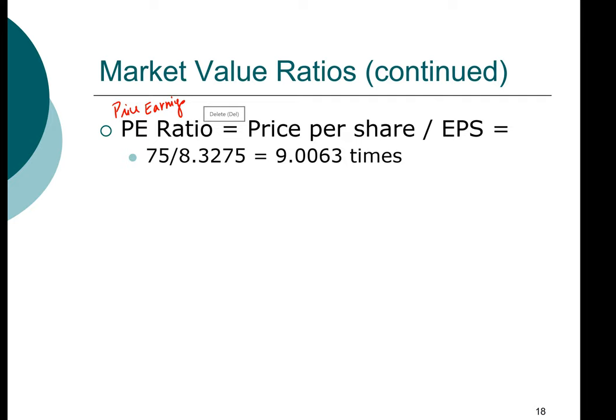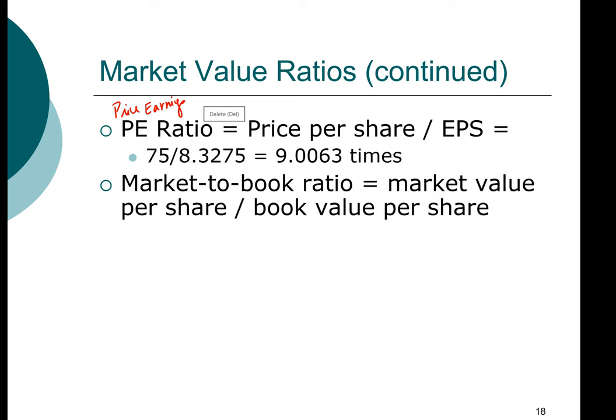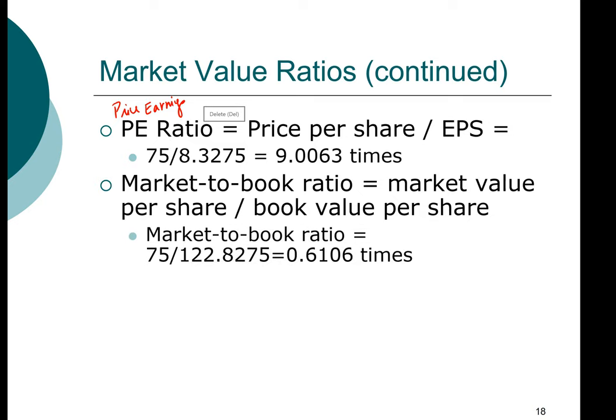The next ratio is the market-to-book ratio. We take the market value of $75 divided by the book value per share, and we get 0.6106. That means the market value is only 61% of the book value of this company — which is very, very low. Looking at the balance sheet, most of the items are tangible, so this stock may be undervalued. It has very low growth prospects and extremely low turnover, so it's very inefficient — but the market is also undervaluing it. This is an example of a potentially valuable purchase and a good investment opportunity, even if it's not a glamorous stock.